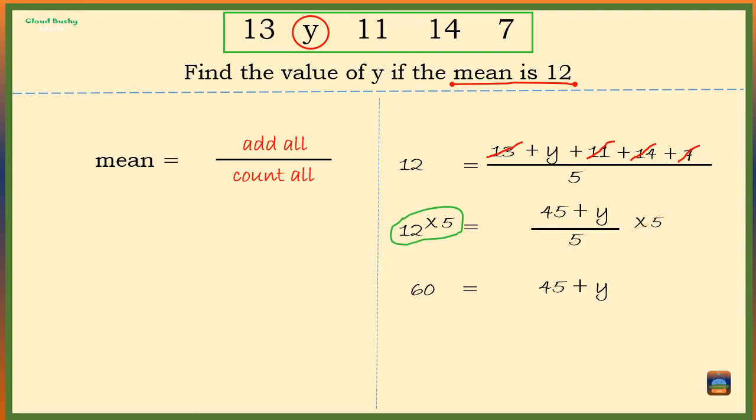Now let's subtract 45 from both sides of the equation. These two will cancel each other out.